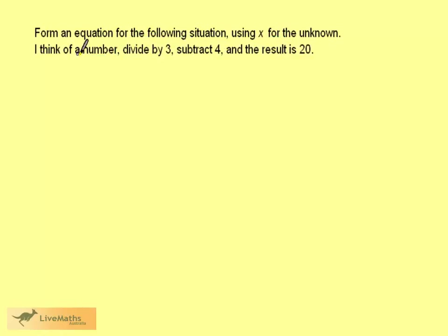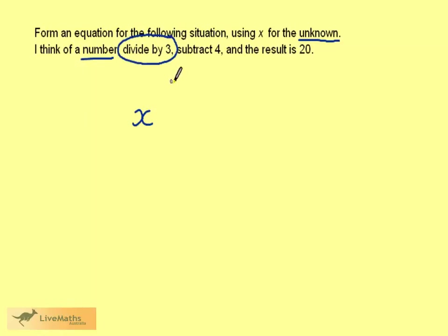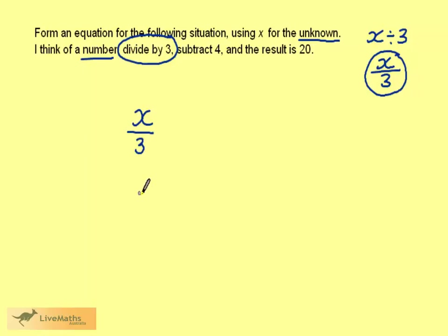We want to form an equation for the following situation using x for the unknown. I think of a number, divide it by 3, subtract 4, and the result is 20. The number we think of is the unknown, so it's called x. The first thing we do to x is divide it by 3. We could write x divided by 3, or x over 3. x over 3 looks better in an equation, so we have x over 3. We then subtract 4 from this number, and we're told the result is 20, so we now have an equation.